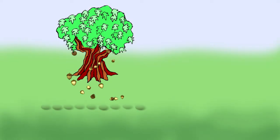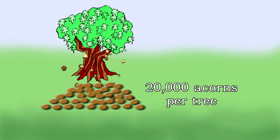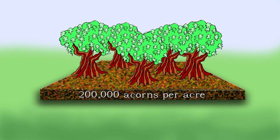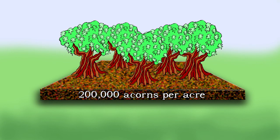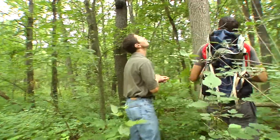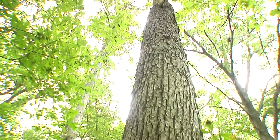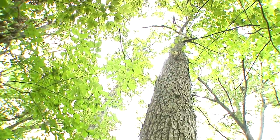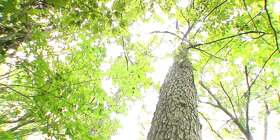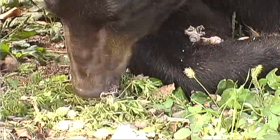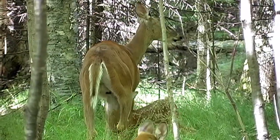Some of these trees can put out over 20,000 acorns in a year — in a good year. Some of these forests in the fall will have over 200,000 acorns per acre on the forest floor. At the base of the pyramid, say we have acorns in a bumper mast crop year — we'll have acorns literally covering this forest floor right here.